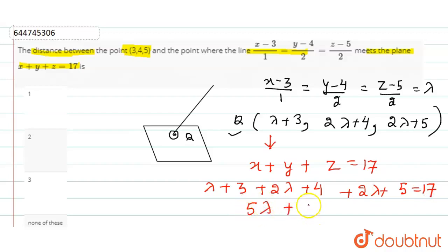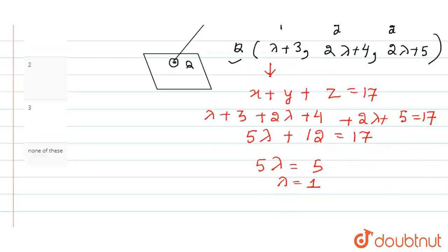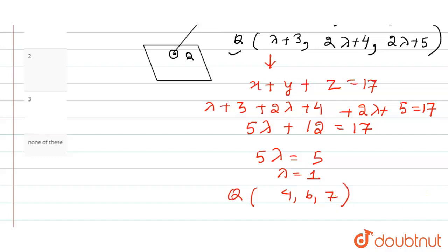Simplifying: 5λ + 12 = 17, so 5λ = 5, giving λ = 1. Substituting λ = 1 back, the coordinates of Q are (4, 6, 7). We have now found the point of intersection of the line and the plane.